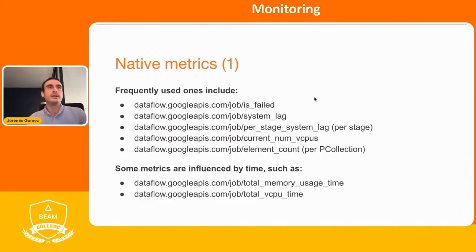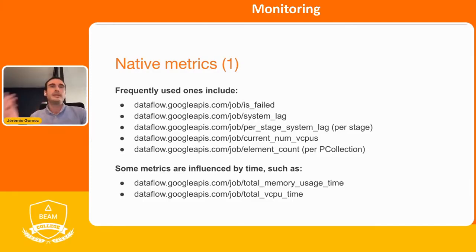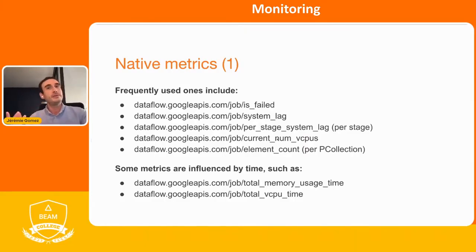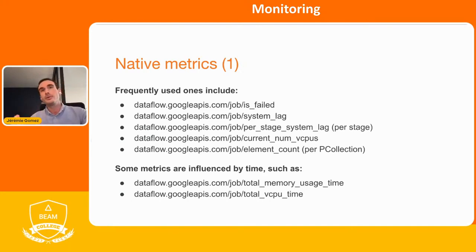Let's look at the native metrics first. Frequently used ones include is_failed — all these metrics start with dataflow.googleapis.com/job. Another very important one is the system lag, which is basically the latency of your pipeline. You have per-stage system lag if you'd like more precise information. You also have the current number of vCPUs, which is really useful to know if your job has auto-scaled and how many CPUs it's currently using.